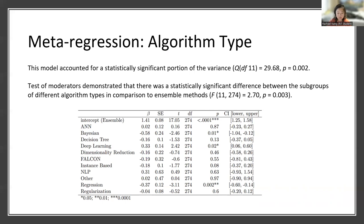Within these models, there were certain subgroups that performed better than the reference standard of ensemble methods — which was deep learning. There were also other models that performed worse than the ensemble method reference standard, and these were Bayesian and regression methods. In two slides, I'm going to talk a little bit more about deep learning and why we may have seen these results of deep learning being potentially a better predictor of suicide risk than the ensemble methods.